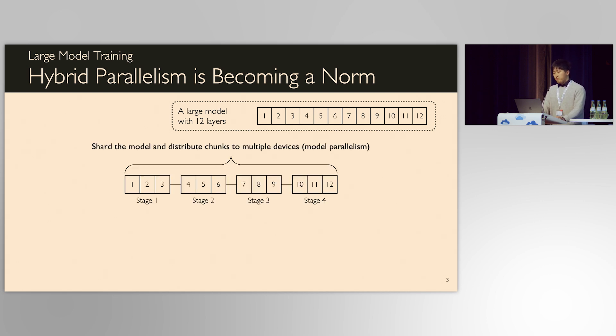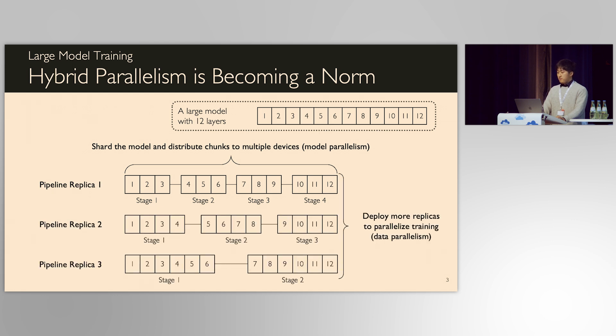Using model parallelism, GPUs assigned to each pipeline stage can have a portion of model states and train a model in a pipeline manner. Combined with data parallelism that distributes training input, hybrid parallelism is becoming a norm of distributed training.